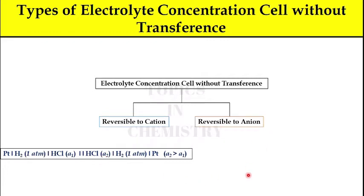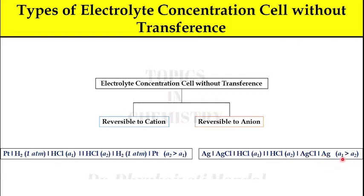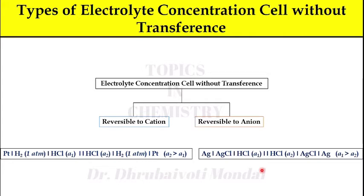Now consider the example of reversible to anion: Ag | AgCl | HCl (activity A₁) ‖ HCl (activity A₂) | AgCl | Ag, where A₁ > A₂. Again you can see a double vertical line is used, meaning these two electrolytes are not in direct contact through a porous partition — a salt bridge is used instead.